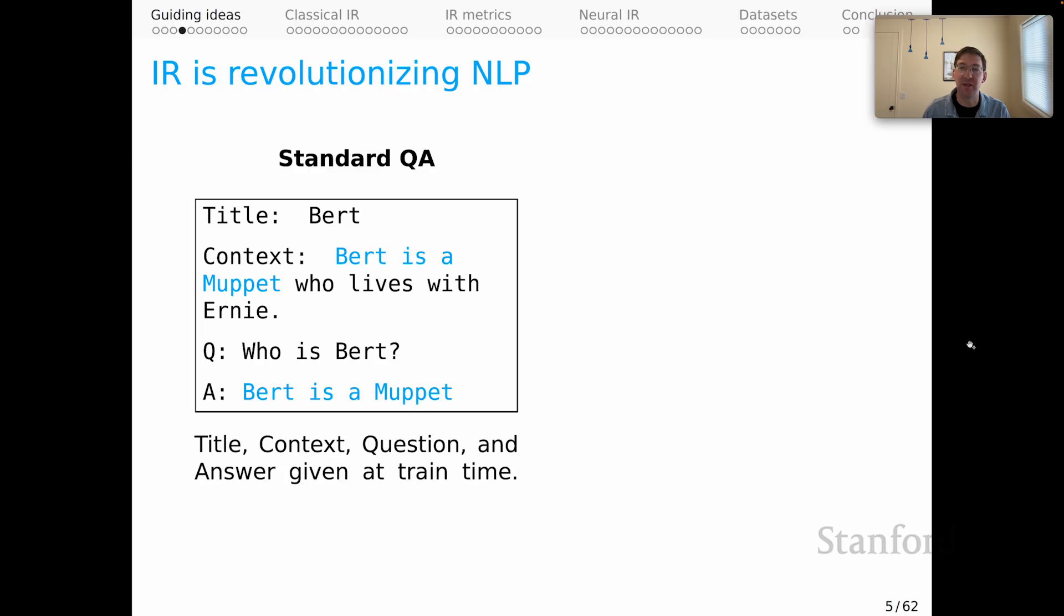In the by now standard formulation of question answering within NLP, the system is given a title and a context passage and a question. And the task is to answer that question. And there is a guarantee that the answer will be a literal substring of that context passage. That is standard QA as formulated in tasks like SQUAD, the Stanford question answering dataset. So at train time, you're given a title, context, question, and answer. And at test time, you're given a title, context, and question. And you have a guarantee that the answer is a literal substring of that context passage. That used to be a hard problem for our best models, but it has grown quite easy.